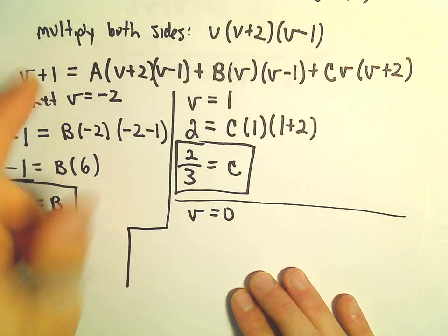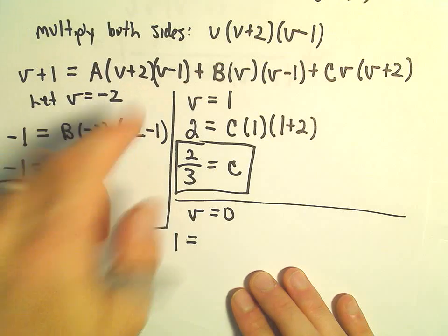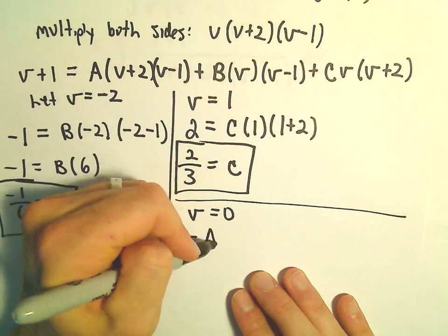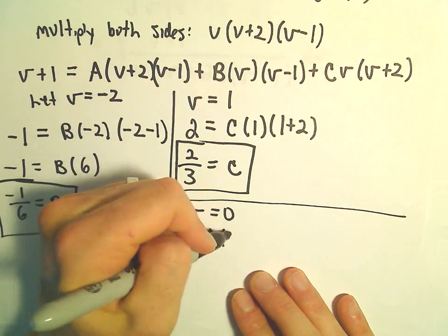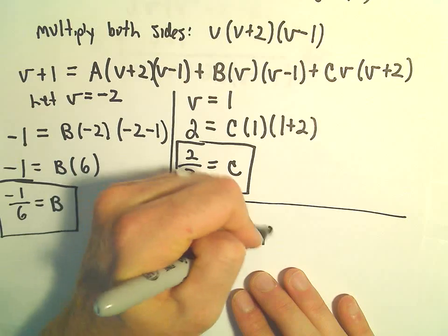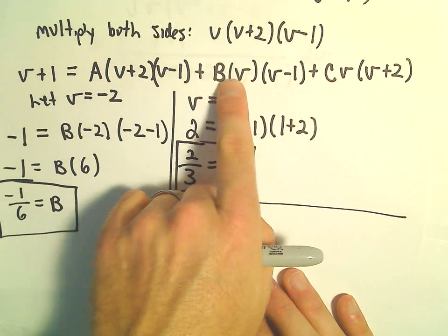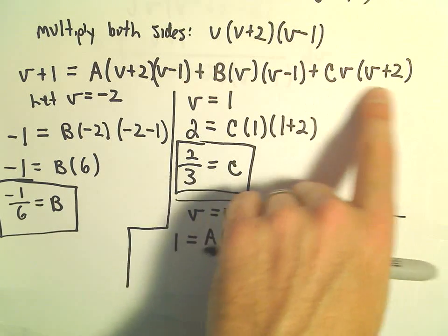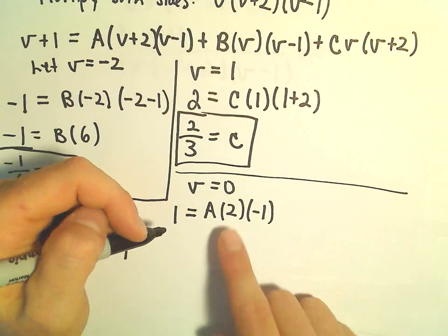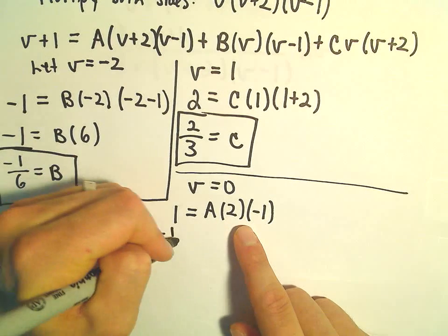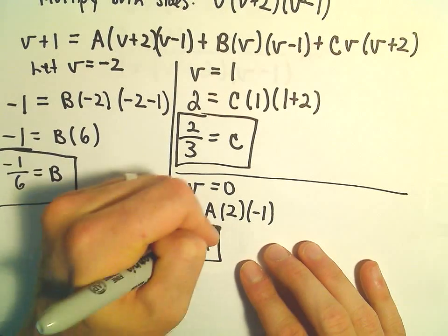Plugging in v = 0: the left side gives positive 1. The second and third terms vanish, leaving A·(0 + 2)·(0 - 1) = -2A. So 1 = -2A, giving a = -1/2.